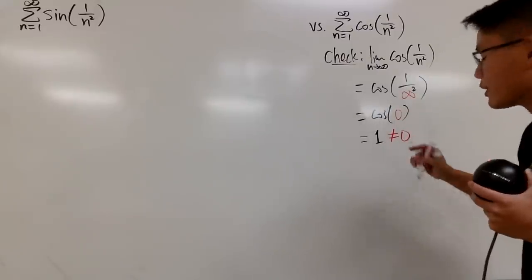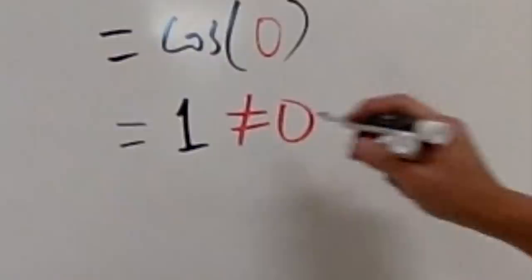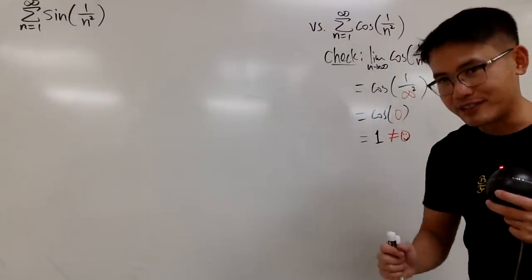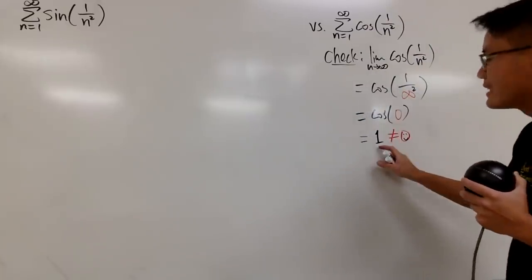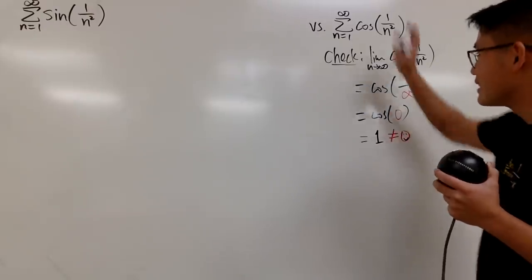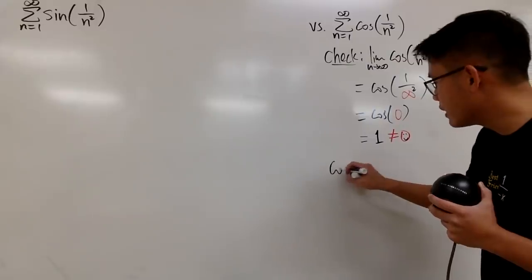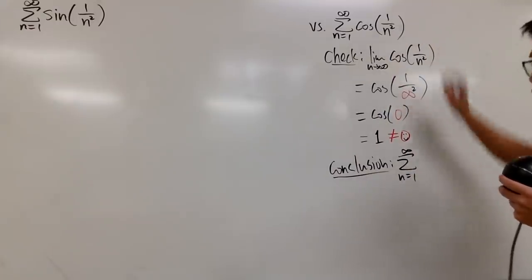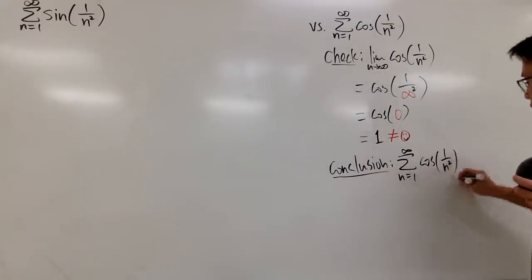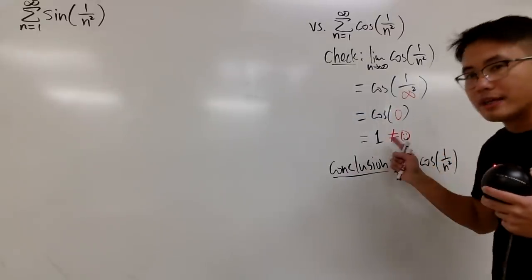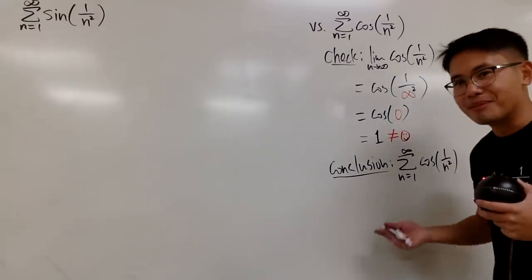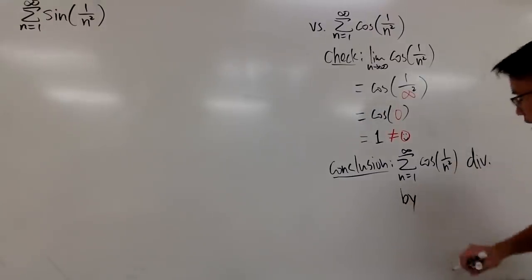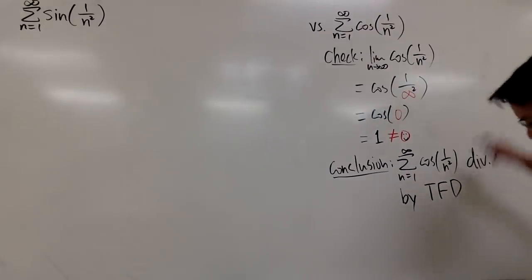This is actually good — this gives you a happy face. When you take the limit of a_n, you are doing the test for divergence. If the limit is not 0, you can draw a conclusion and say that this series diverges. The conclusion is that when you add up all these terms, you are essentially adding a bunch of 1s. With infinitely many 1s, the sum is infinity. So this diverges — DIV — and the reason is the test for divergence, TFD.